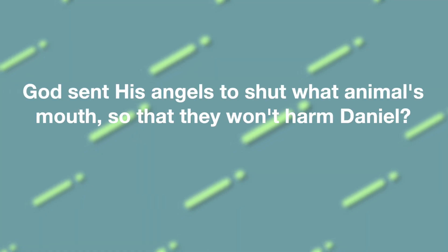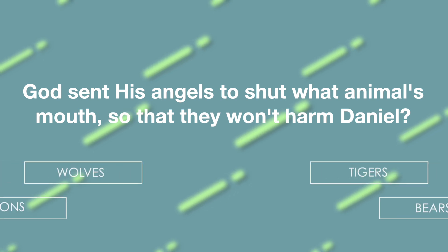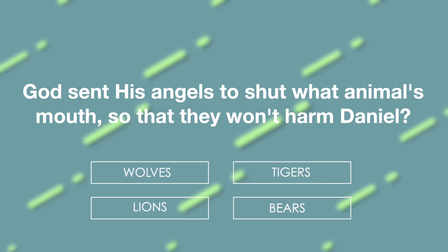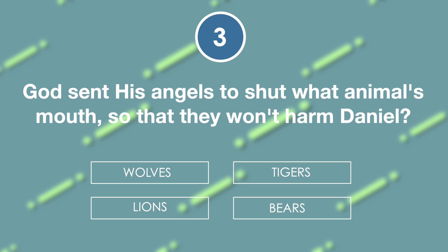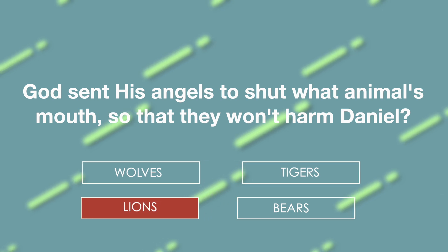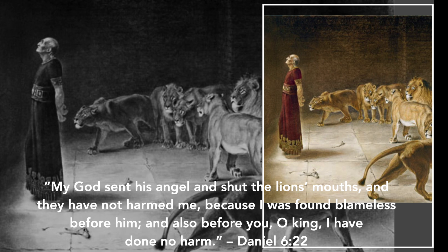God sent his angels to shut what animal's mouth so that they would not harm Daniel? Is it wolves, tigers, lions, or bears? The answer is lions. 'My God sent his angel and shut the lion's mouth, and they have not harmed me, because I was found blameless before him, and also before you, O king, I have done no harm.' Daniel 6:22.